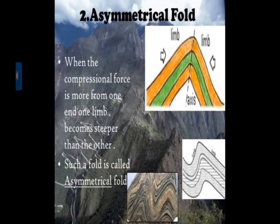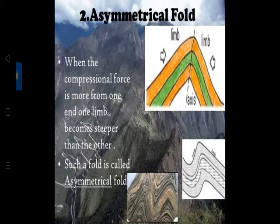Asymmetrical - look at the limbs, they are inclined. When the compression force is more from one end, one limb becomes steeper than the other. Steeper means almost perpendicular, or they rise and fall sharply - that is what steepness means, like a steep flight of stairs.